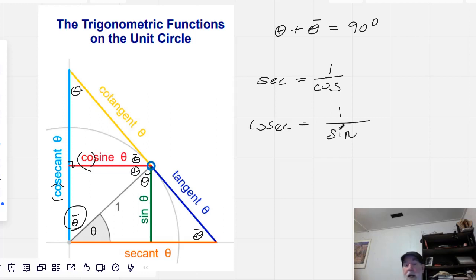And then, finally, your cotangent is one over the tangent. But we could also see it as being the tangent of the complement of theta. And so, here it is. It's this opposite side divided by one, and it's the complement of theta.